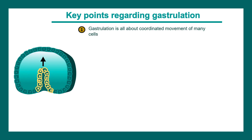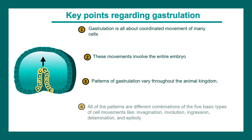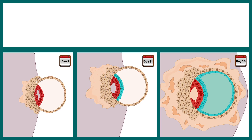Gastrulation is all about coordinated movements of a pool of cells, and this movement involves the entire embryo. Patterns of gastrulation could vary throughout the animal kingdom — there could be different types of movements happening during gastrulation. A combination of these morphogenetic movements happens during gastrulation, and we'll take an example of the human embryo to understand this better.